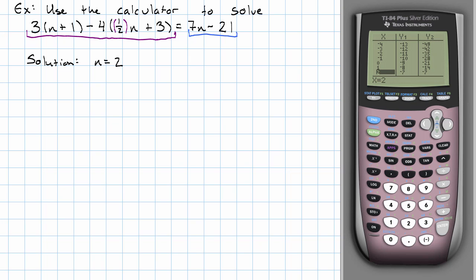In the expression on the left, 3 times 2 plus 1 minus 4 times 1 half times 2 plus 3. Let's see. Working out the arithmetic in parentheses. 3 times 3 minus 4 times 1 half times 2 is 1 plus 3 is 4. So we have 9 minus 16 is negative 7.